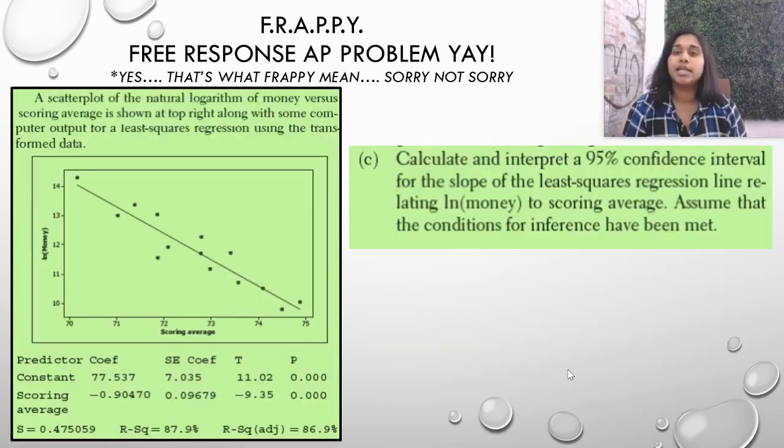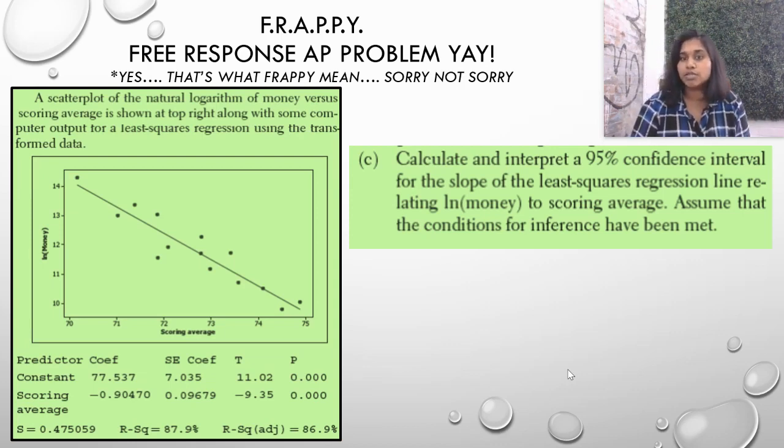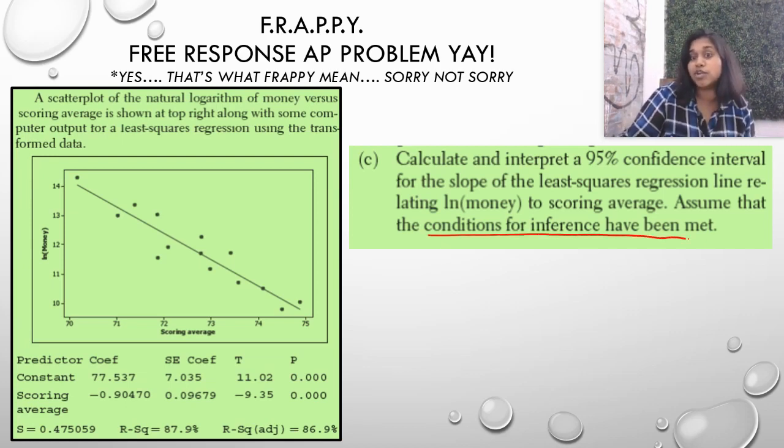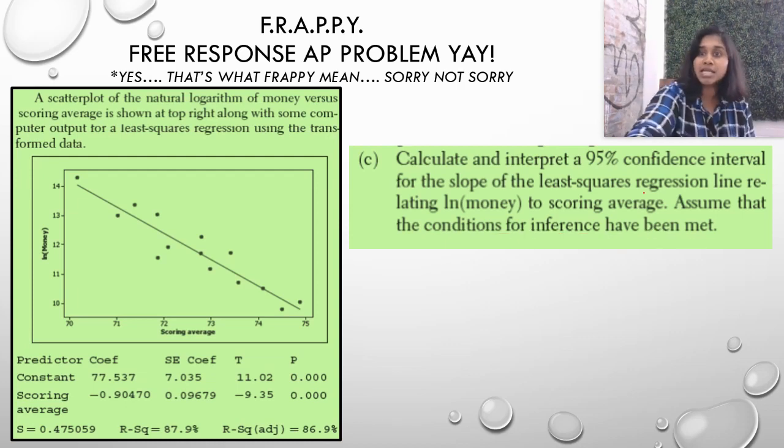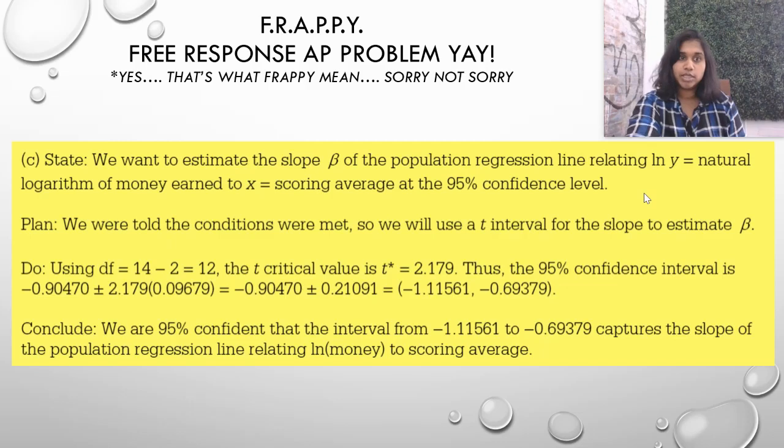Last question. Calculate and interpret a 95% confidence interval for the slope of the least squares regression line relating the natural log of money to scoring average. Assume that conditions for inference have been met. So, here's our plan step. Conditions for inference have already been met. So, this is a state plan do conclude. So, I'm going to pull up that whole thing in one giant state.